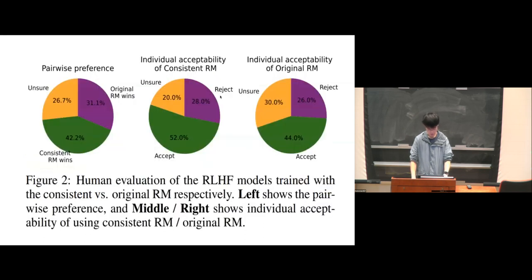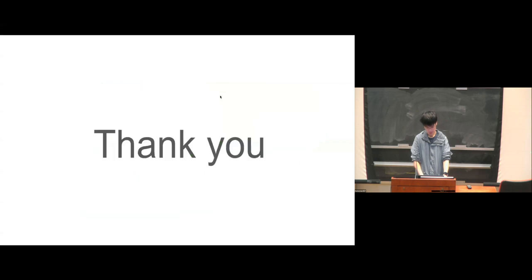We also investigate the trickle-down impact of the consistent reward model. We have a consistent reward model and an inconsistent one. We use them to guide two RLHF processes and conduct human evaluation on these two cases. As we can see, there are pairwise preference and individual accessibility of two RLHF models. Basically, we can see that with a more consistent reward model, the final RLHF model has better performance. That's all. Thank you. I'm happy to answer any questions.